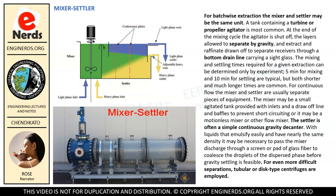For continuous flow the mixer and settler are usually separate pieces of equipment. The mixer may be a small agitated tank with inlets, a draw-off line, and baffles to prevent short-circuiting, or it may be a motionless mixer or other flow mixer. The settler is often a simple continuous gravity decanter. With liquids that emulsify easily and have nearly the same density, it may be necessary to pass the mixer discharge through a screen or pad of glass fiber to coalesce the droplets of the dispersed phase before gravity settling is feasible. For even more difficult separations, tubular or disc-type centrifuges are employed.